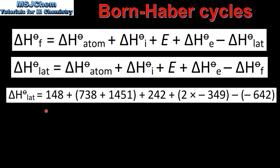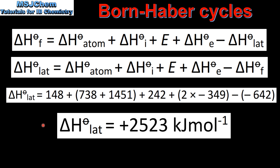Next we'll input the values into the equation, being careful to account for the negative signs for the first electron affinity and the standard enthalpy change of formation. This gives us the lattice enthalpy of magnesium chloride, which is positive 2523 kJ per mole.